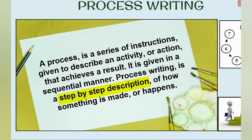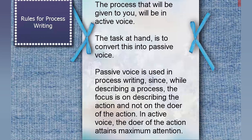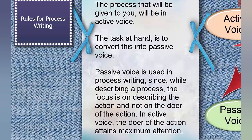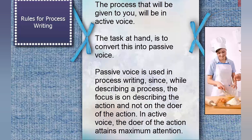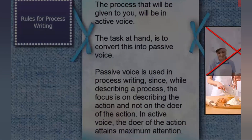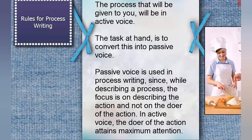Rules for process writing: the process given to you will be in active voice, and the task is to convert it into passive voice. Passive voice is used in process writing since, while describing a process, the focus is on describing the action and not on the doer of the action. In active voice, the doer of the action attains maximum attention.